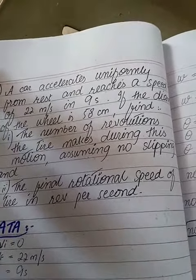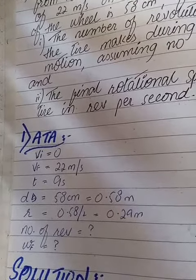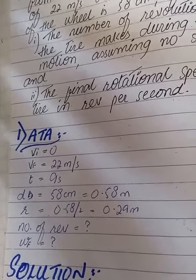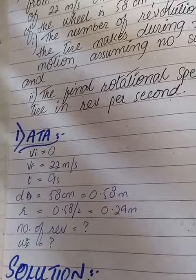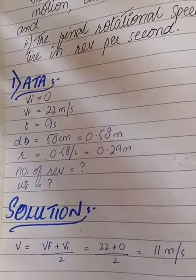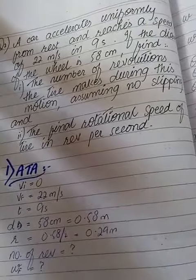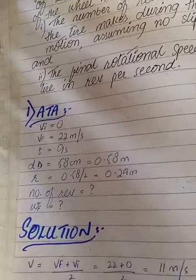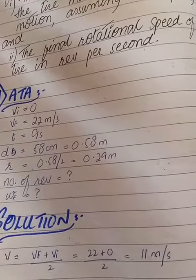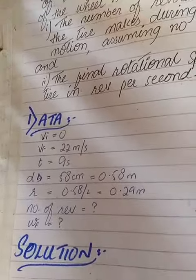Also find the final rotational speed of the tire in revolutions per second. The data: initial velocity is 0, final velocity is 22 m/s, time is 9 seconds, diameter is 58 cm or 0.58 m, and radius is 0.29 m.